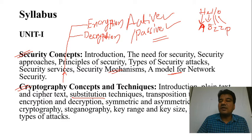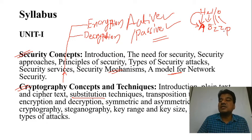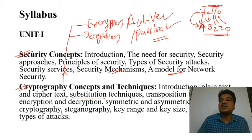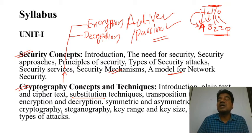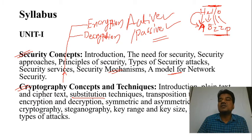After substitution, the entire plain text becomes completely unreadable. If a third party gets the message 'A-B-Z-Z-P', they will not understand anything. But if you transmit the message as-is without substitution, the third party will understand the content. So substitution techniques prevent that, confusing any interceptor. Transposition techniques will also be covered.